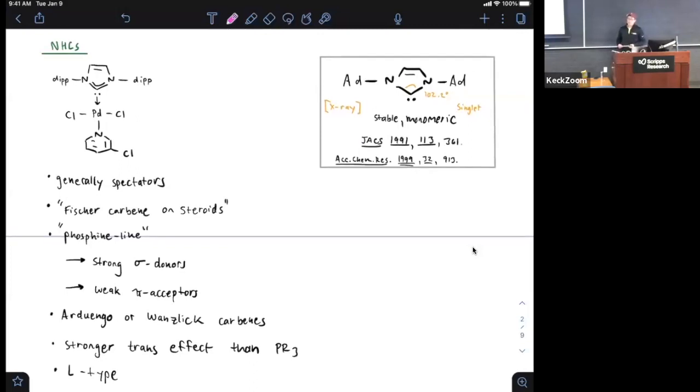NHCs, as we covered briefly at last class, stands for N-heterocyclic carbenes. These are a special class of Fischer carbenes, or as Bob Crabtree describes them, they're Fischer carbenes on steroids. That's referring to the fact that now, instead of just one flanking heteroatom, you actually have two flanking heteroatoms, both with lone pairs, both of which can donate electron density into that unfilled key orbital.